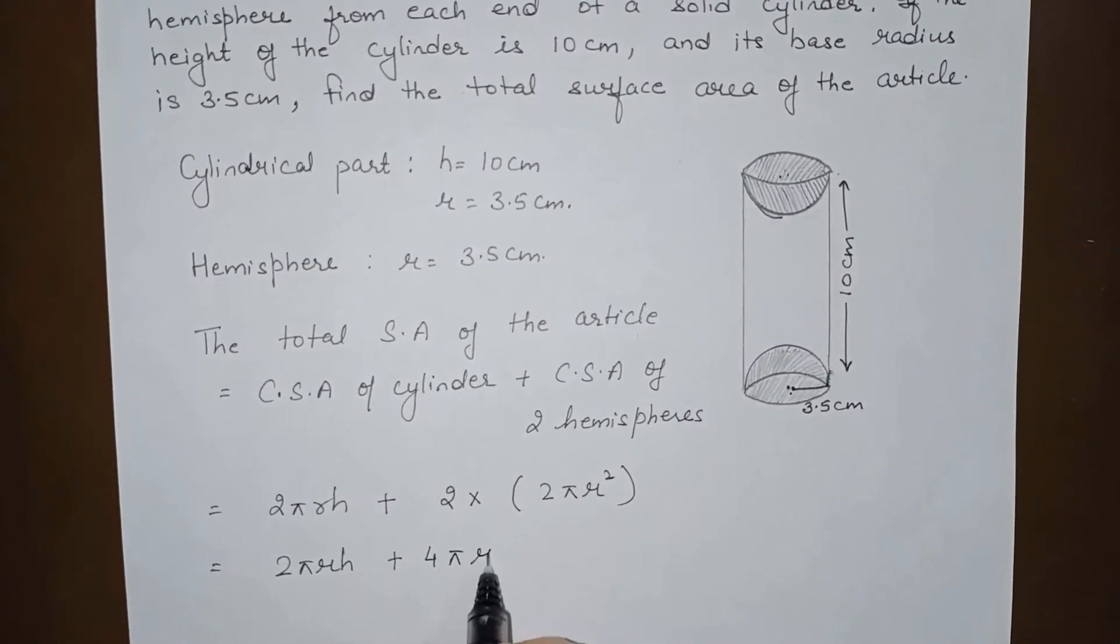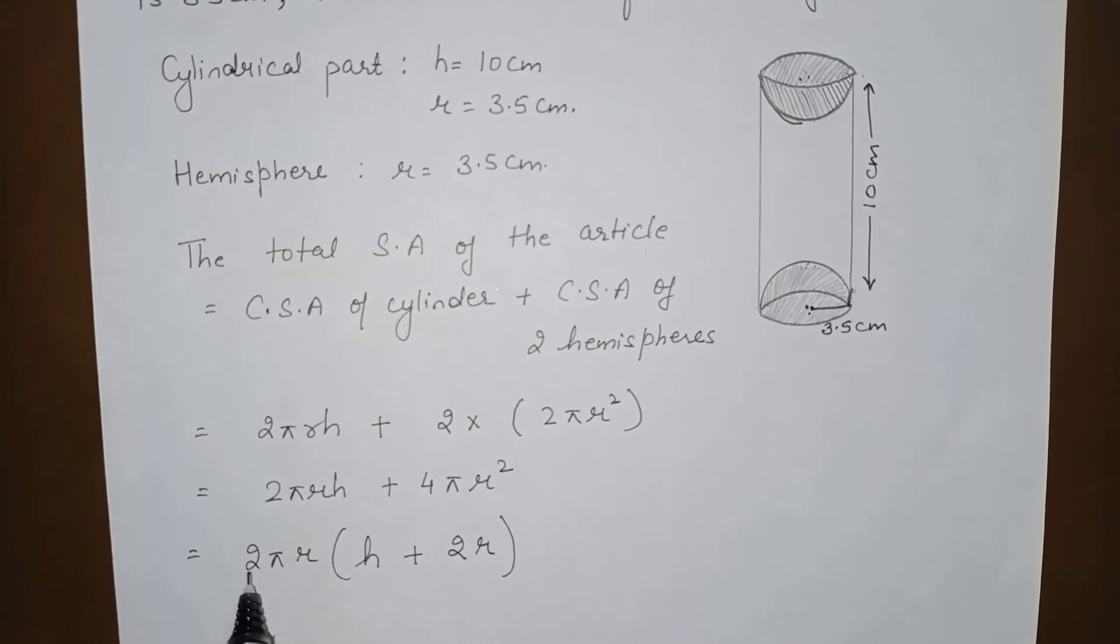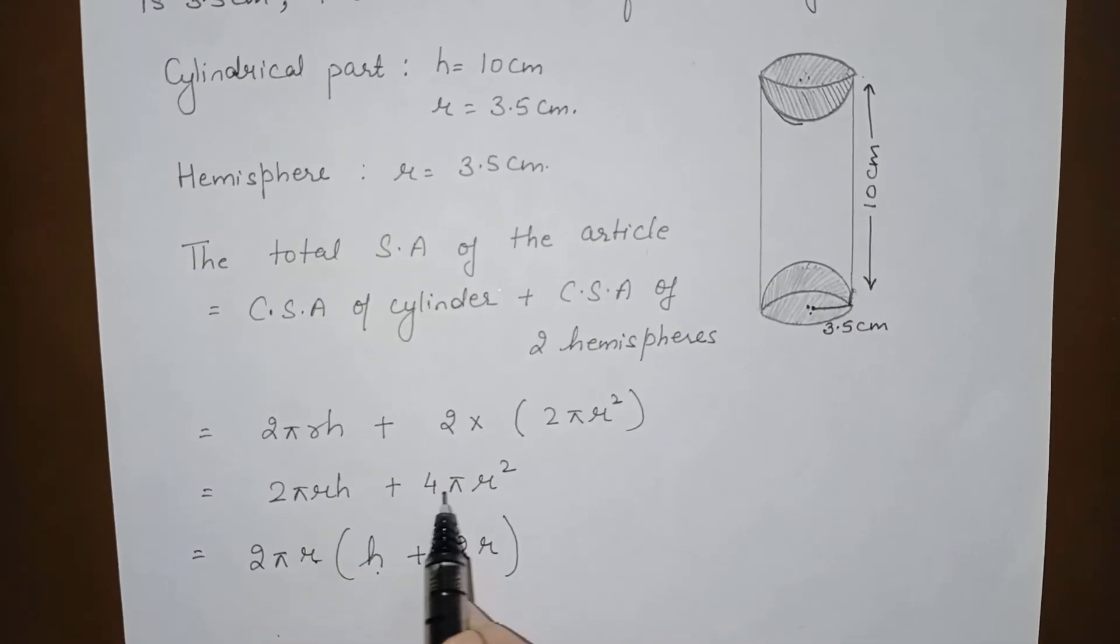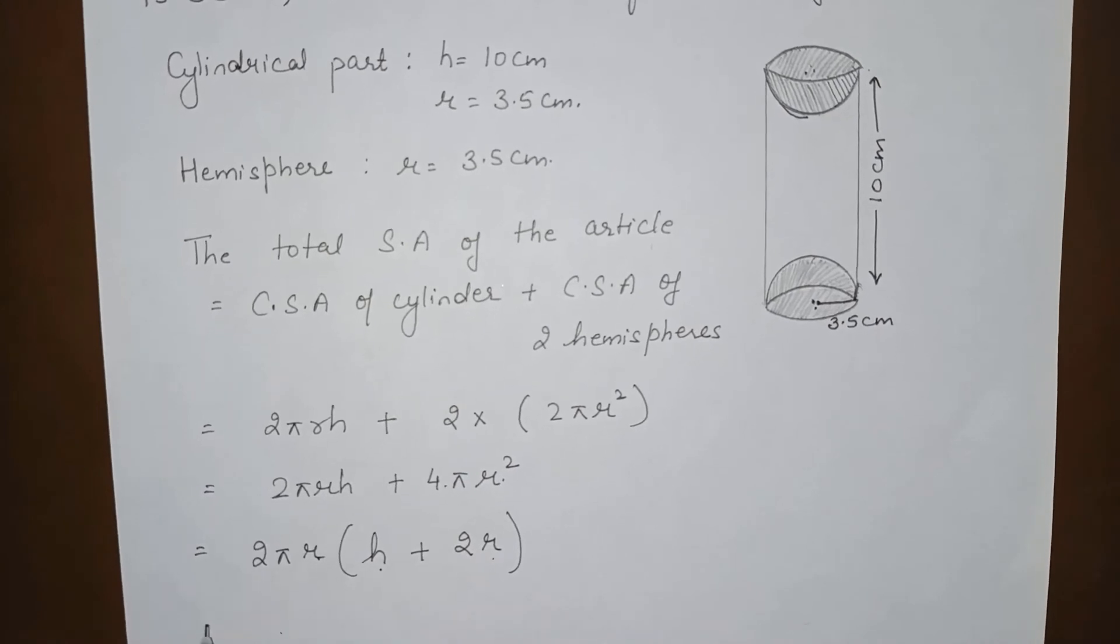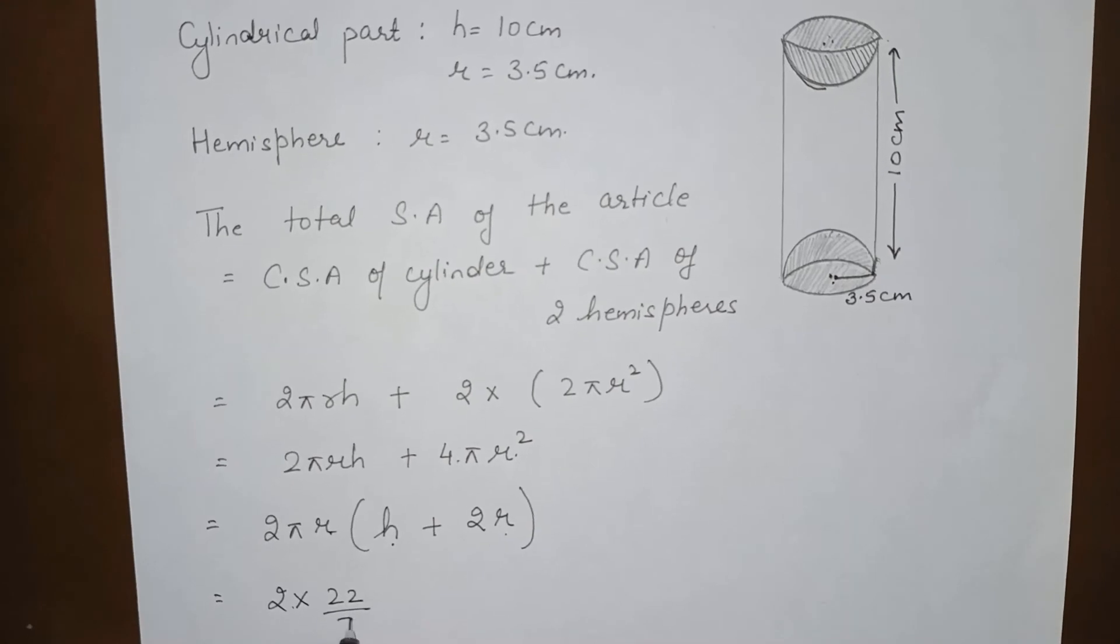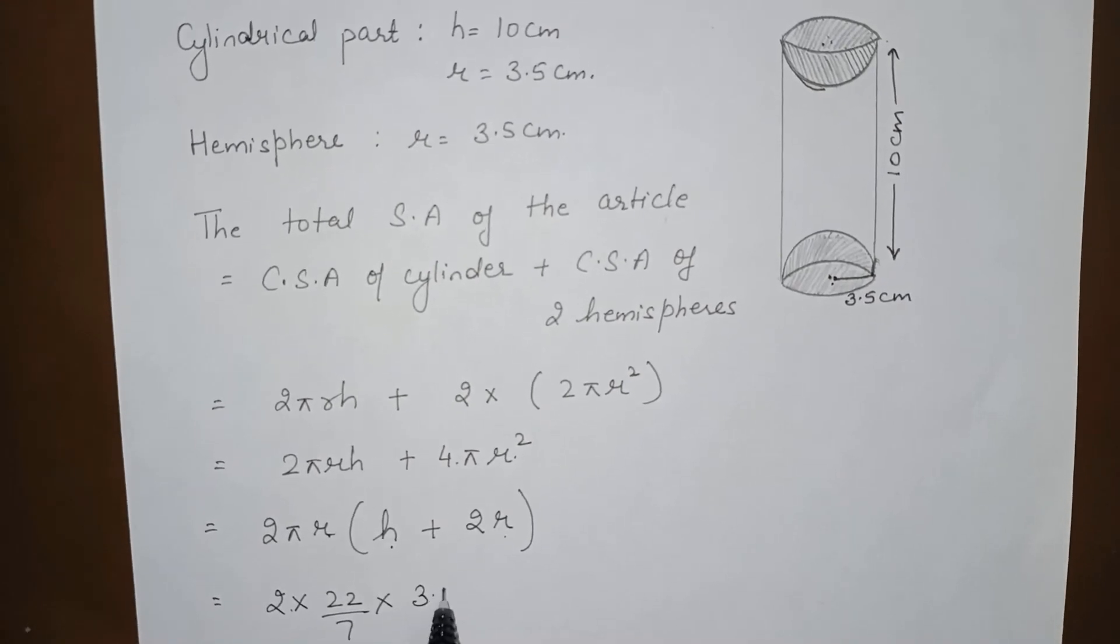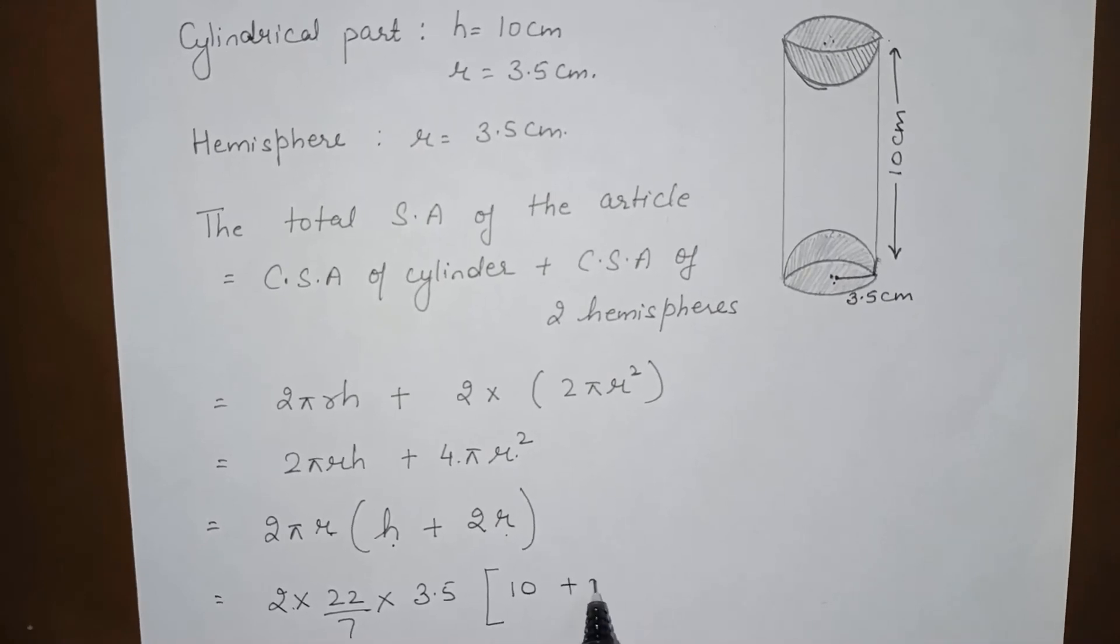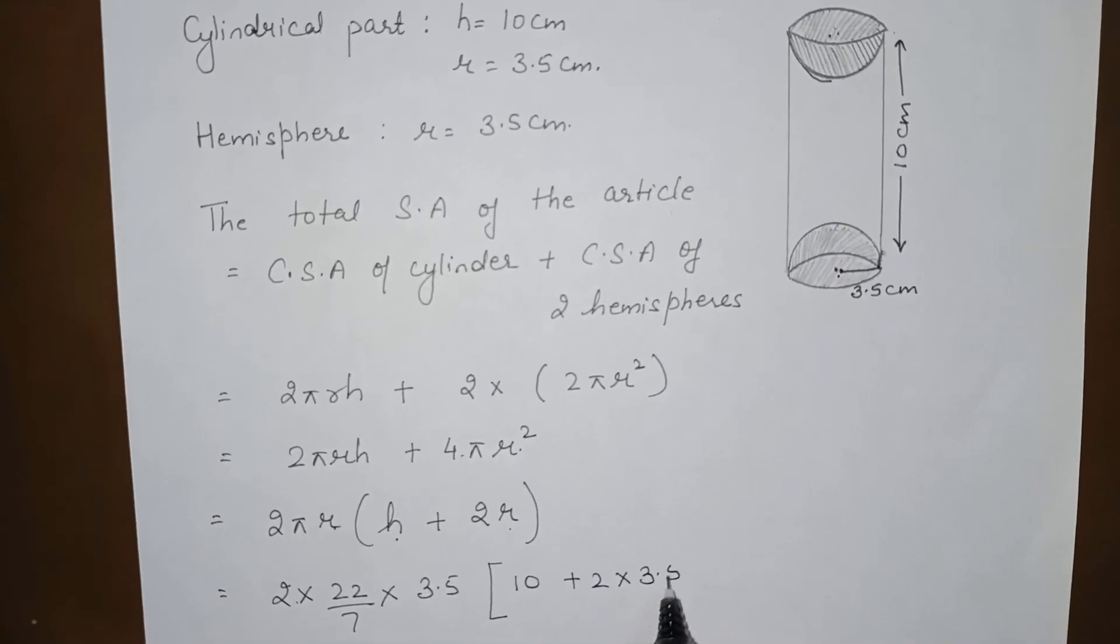So when we take 2πr common, from here h and from here we are left with 2r. So this is 2 × 22/7 × 3.5, h is 10, and 2 multiplied by 3.5. This is 10 plus 3.5 into 3.5 into 2 is 7.